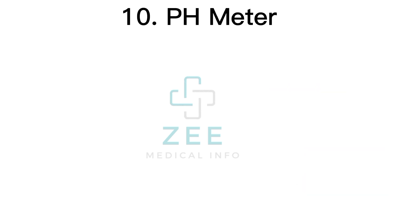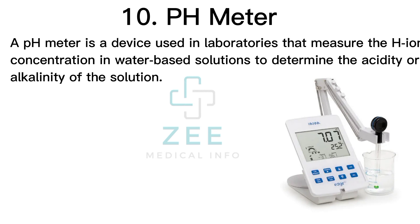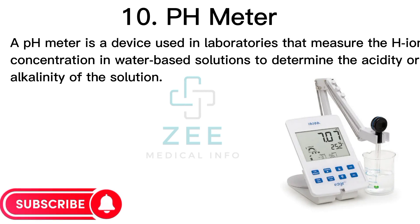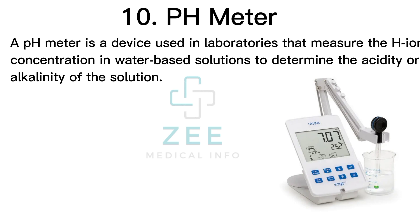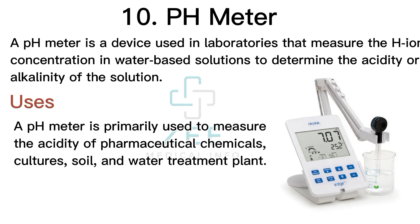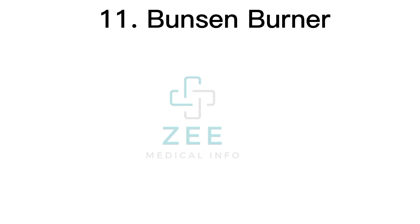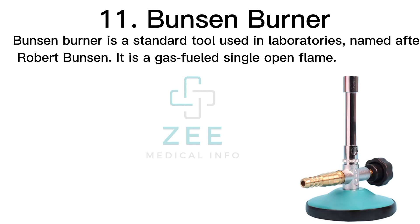A pH meter is a device used in laboratories to measure the H-ion concentration in water-based solutions to determine the acidity or alkalinity of the solution. A pH meter is primarily used to measure the acidity of pharmaceutical chemicals, cultures, soil, and water treatment plants.